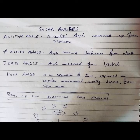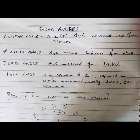Altitude angle is the elevation angle measured up from the horizon. Azimuth angle is the angle measured clockwise from north. Zenith angle is the angle measured from vertical. Hour angle is an expression of time expressed in angular measurement, usually degrees from the solar node.